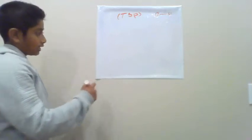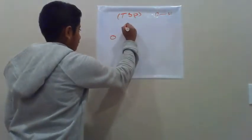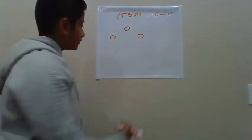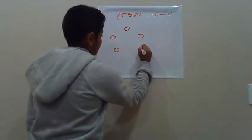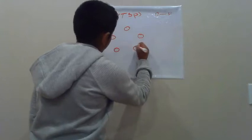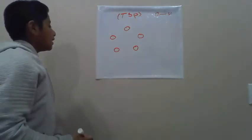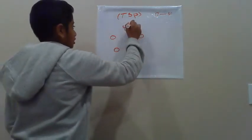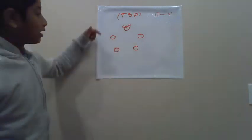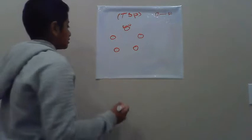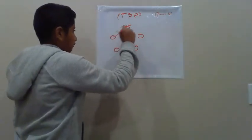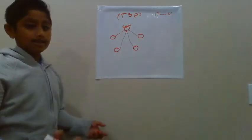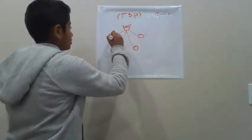We can draw these houses as circles, and in programming we call these circles nodes. To keep it simple, let's say we have five different nodes, or five different houses. We start at one house and want to get to all the others, finding the shortest route. This is a weighted graph, where all the edges have weights representing distance.